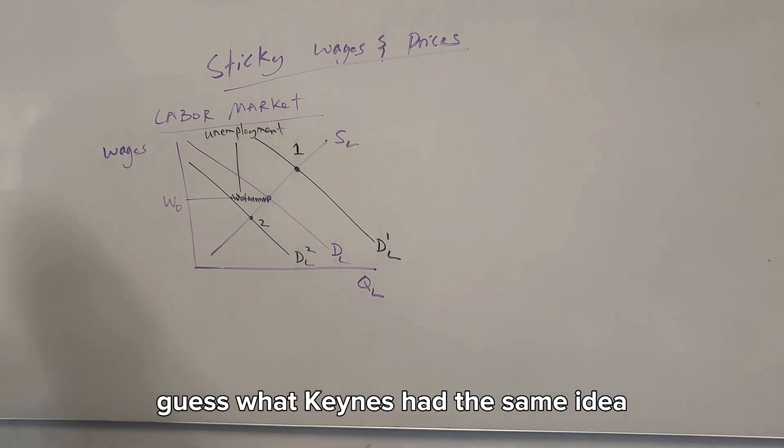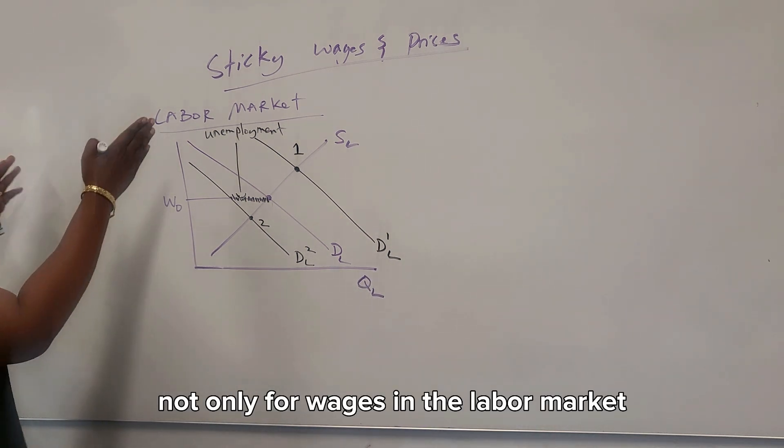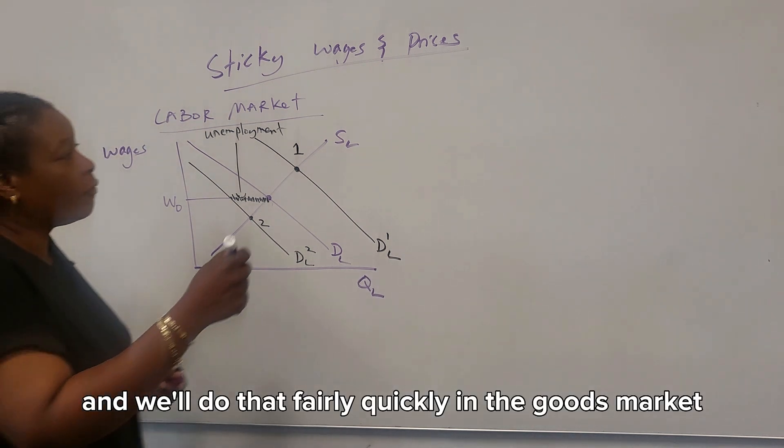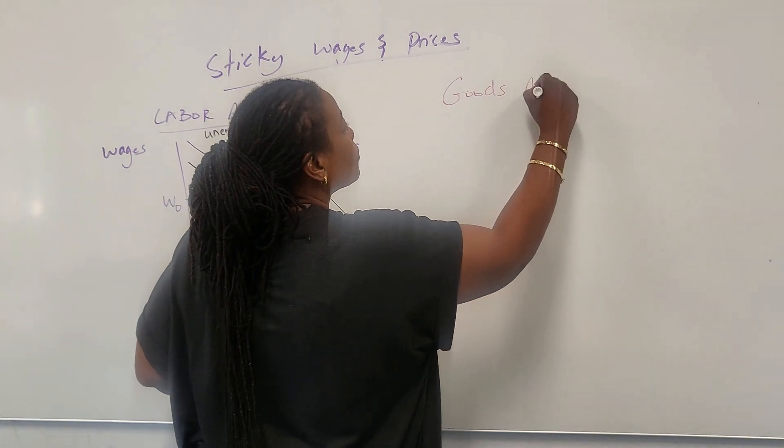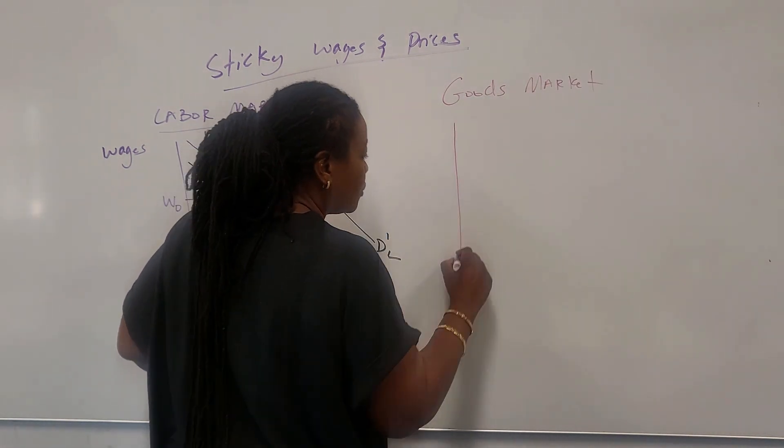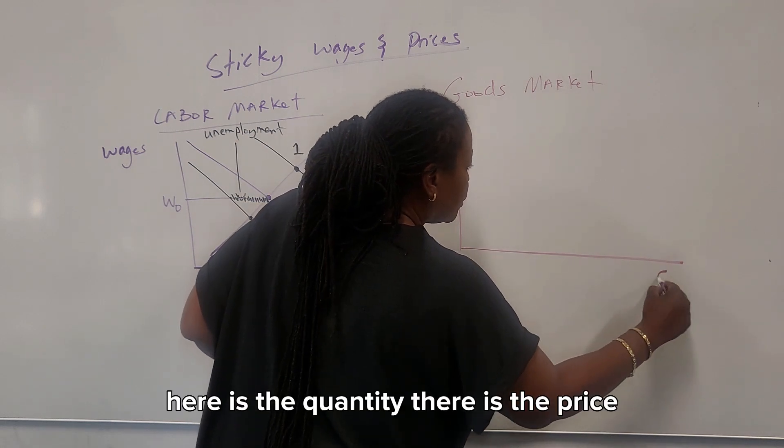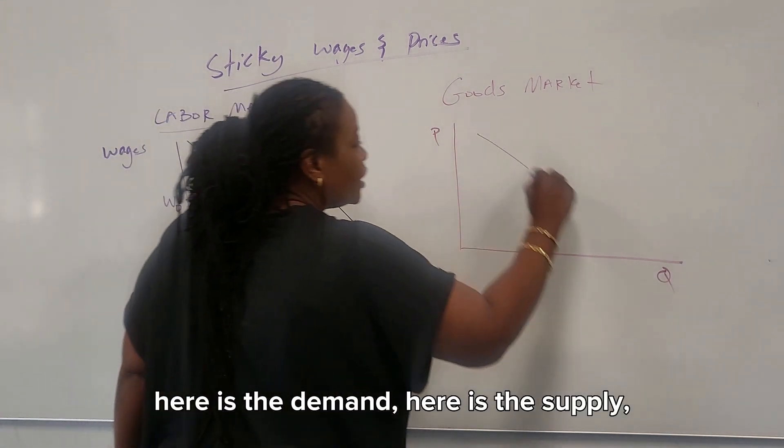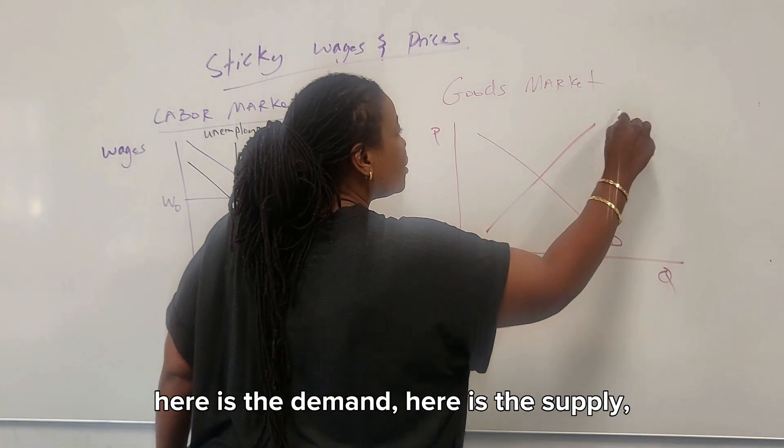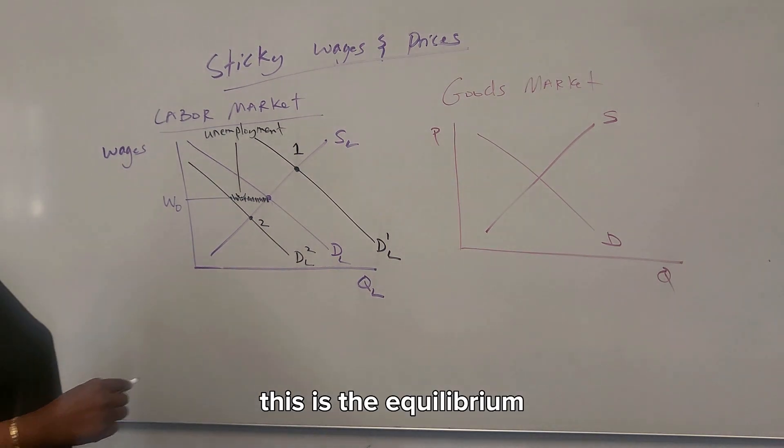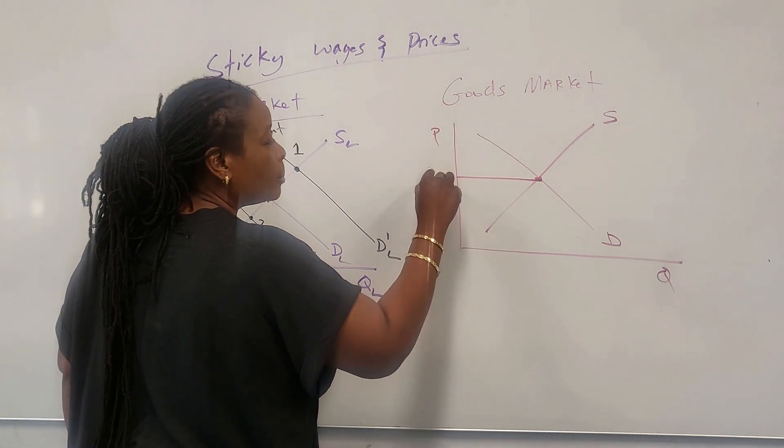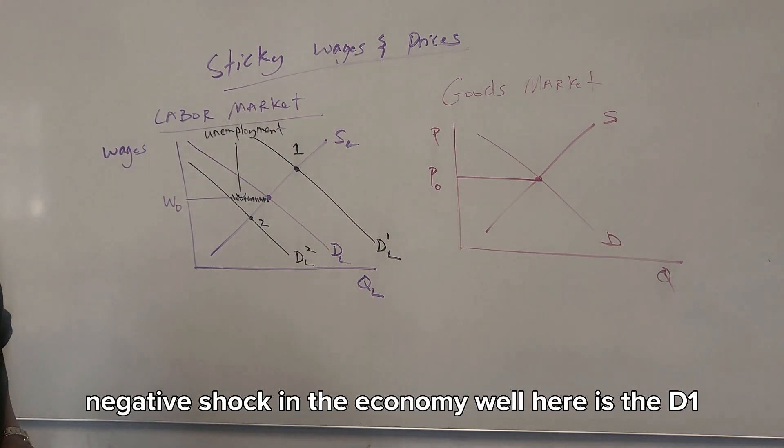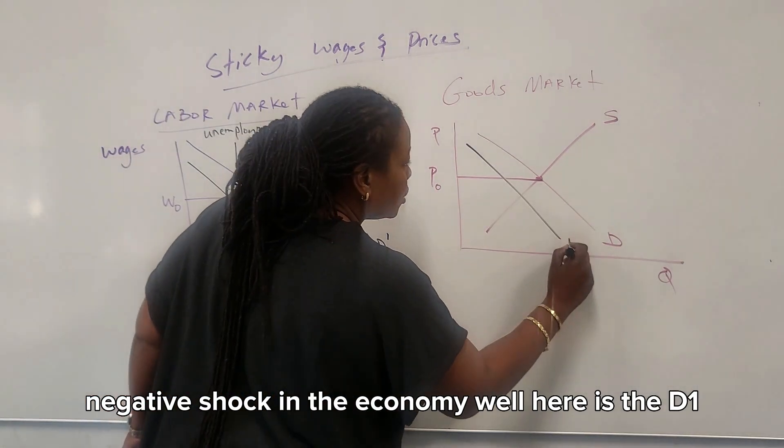Guess what? Keynes had the same idea, not only for wages in the labor market, but for prices generally. And we'll do that fairly quickly in the goods market. Here is the quantity. Here is the price. Here is the demand. Here is the supply. This is the equilibrium.